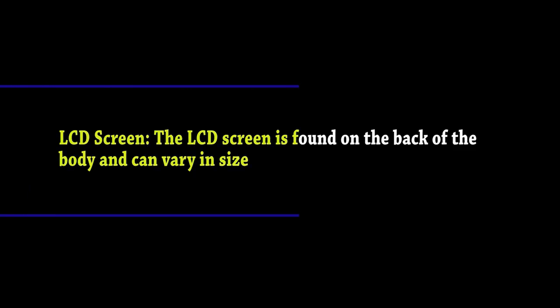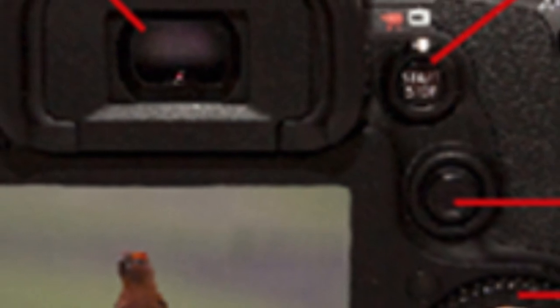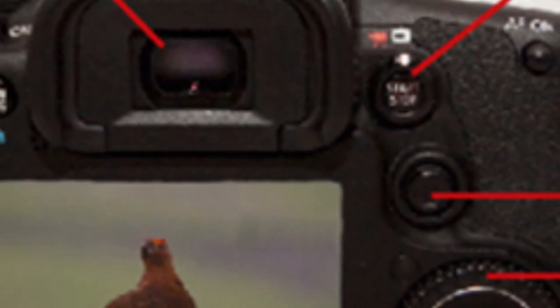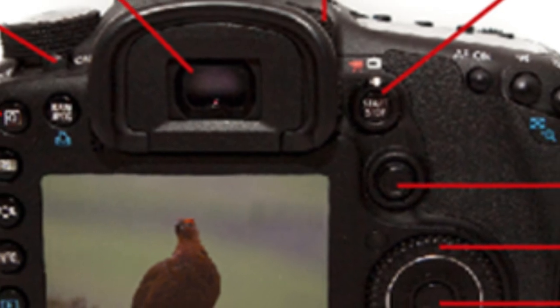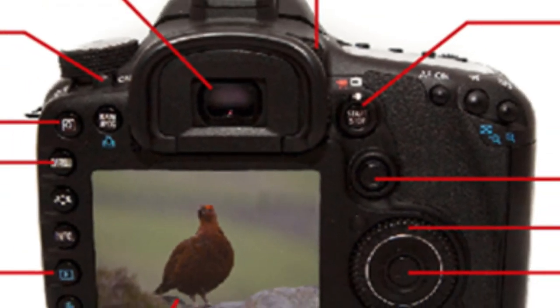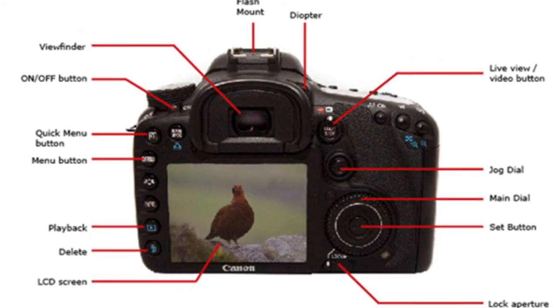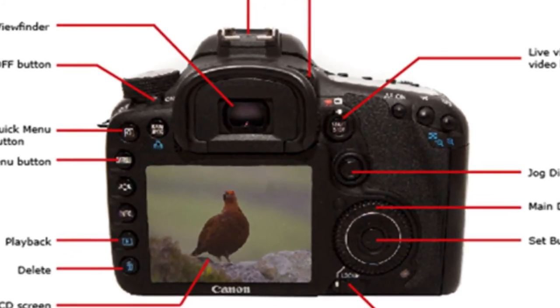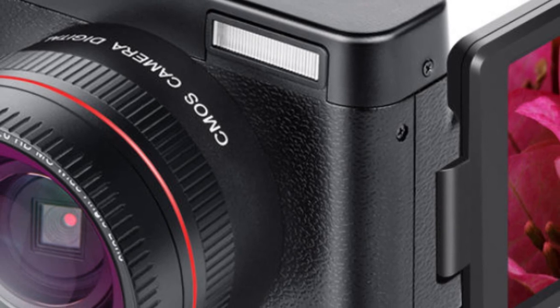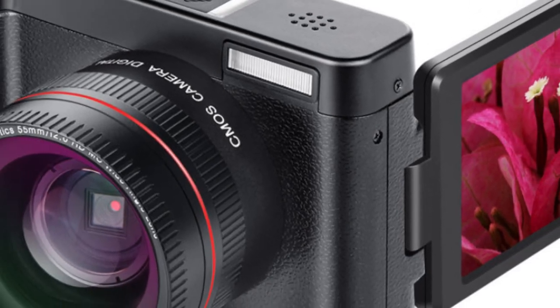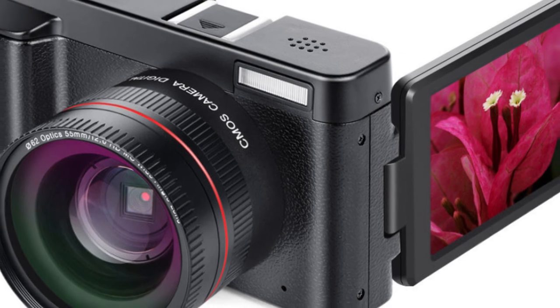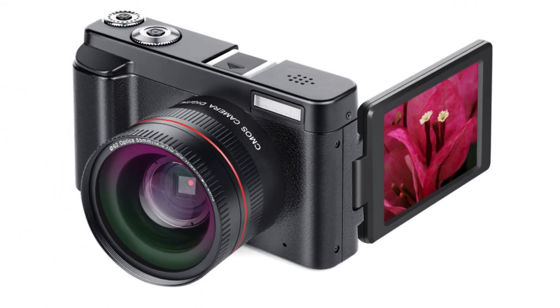The LCD screen is found on the back of the body and varies in size. On digital compact cameras, the LCD has typically begun to replace the viewfinder completely. On DSLRs, the LCD is mainly for viewing photos after shooting, but some cameras do have a live mode as well.